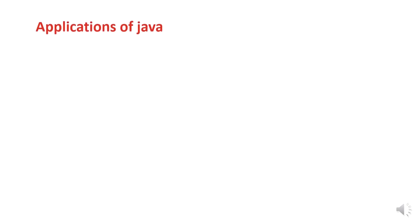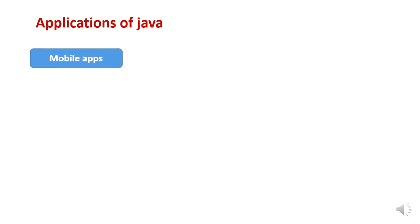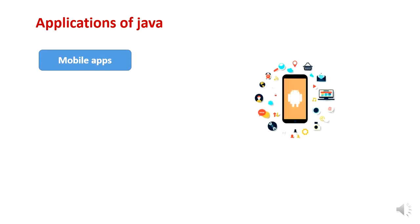Let us look at applications of Java — meaning where Java is useful. The first application is mobile apps. We are all aware of mobile applications used in our day-to-day life. Android mobile applications can be built using the knowledge of Java. This is one of the applications of Java.